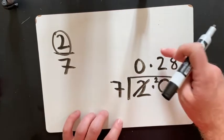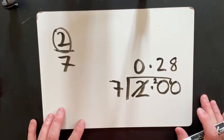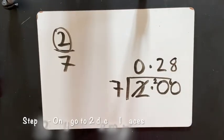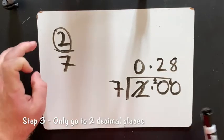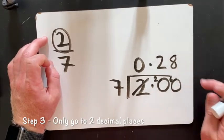And I've now got to 2 decimal places, so I'm not going to go any further because that's all you need to do. So I've changed 2 7s into a decimal.